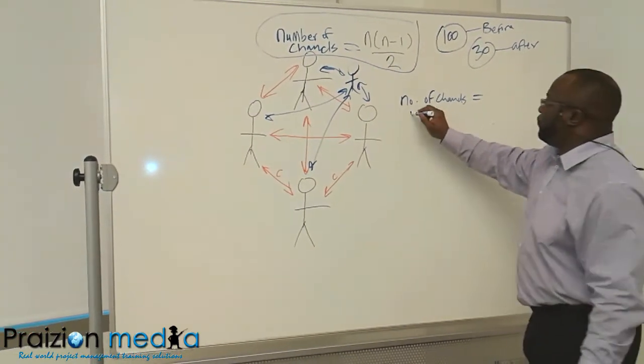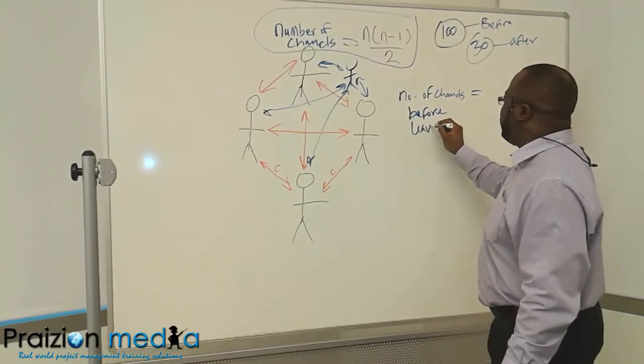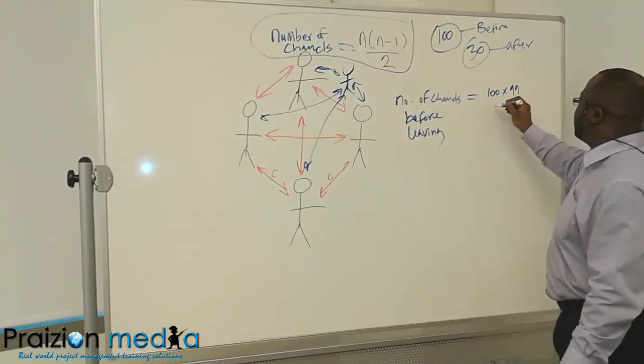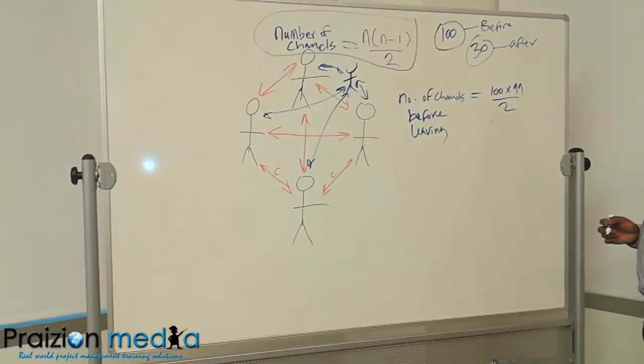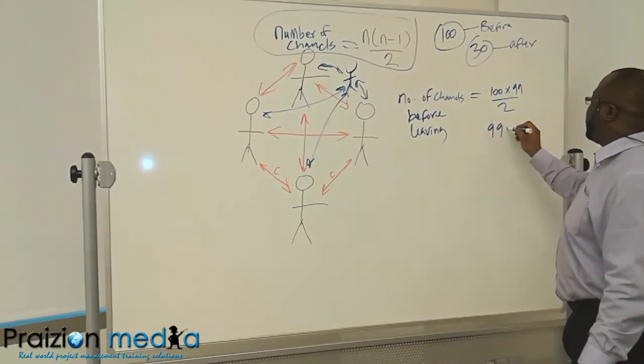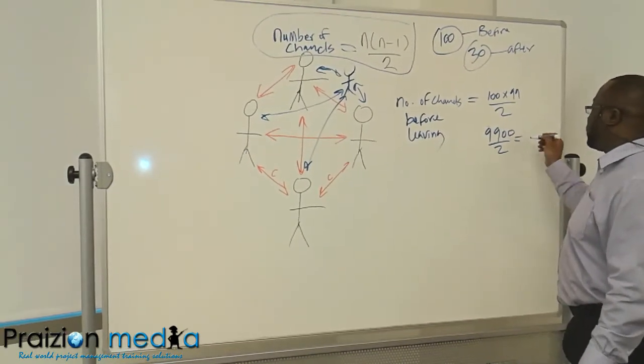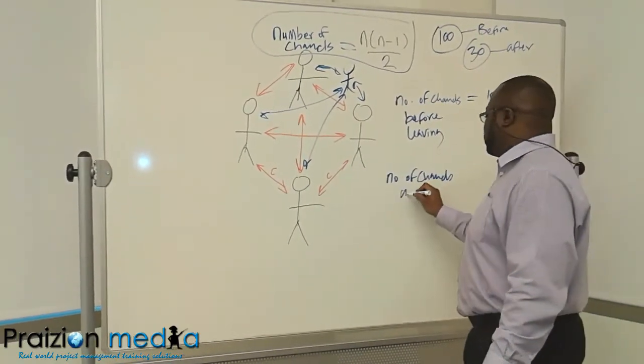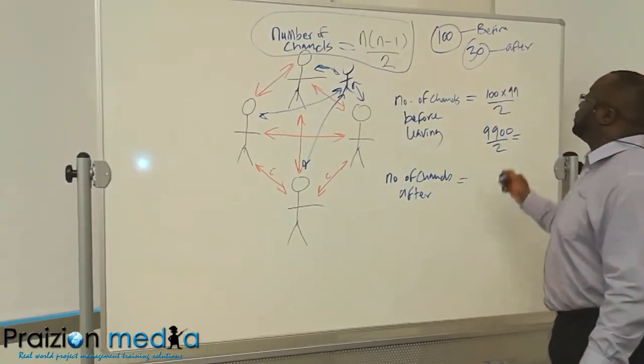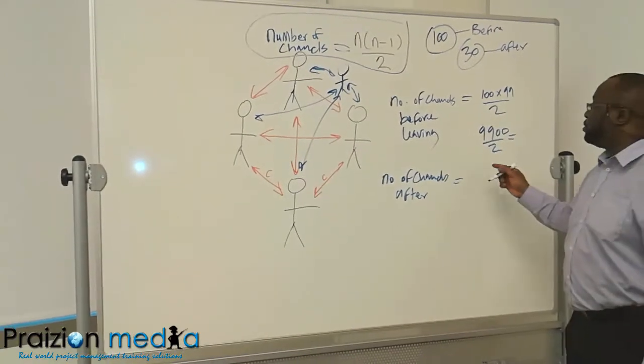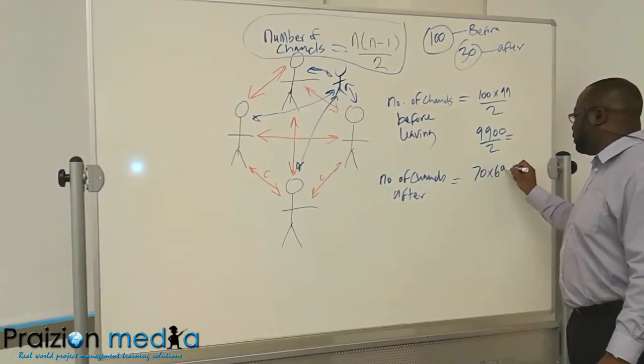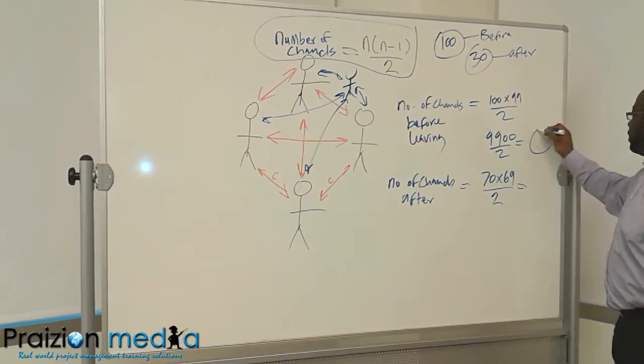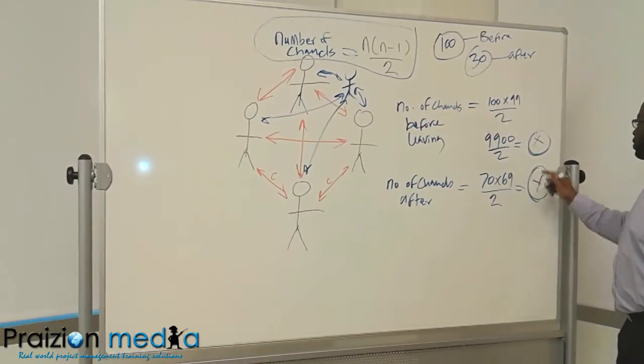So you would say number of channels before they left, before 30 people left, it's going to be 100 times 99 divided by 2. So this would be 9,900 divided by 2, whatever that comes to. And then the number of channels after is going to be what? 30 people have gone. How many do you have left? 70. So it's going to be 70 times 69 divided by 2.